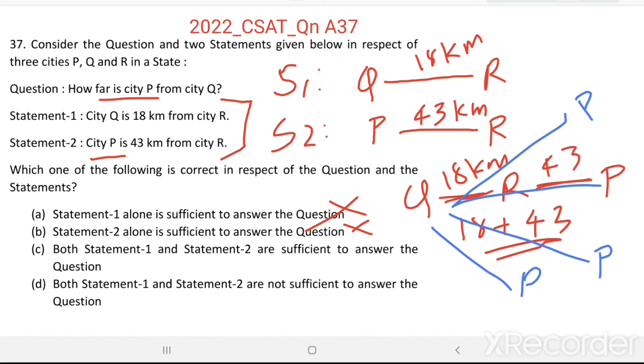So, even using both these statements, we cannot say what is the distance between P and Q. Therefore, both statement 1 and statement 2 are not sufficient to answer the question. Option D is the right answer.